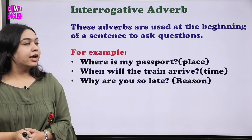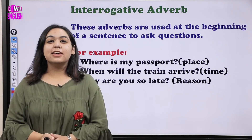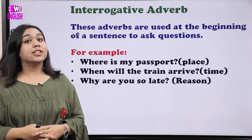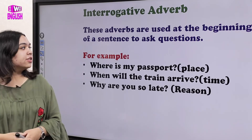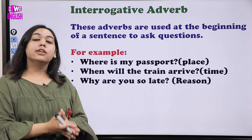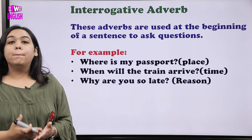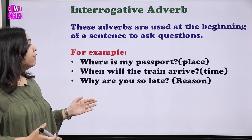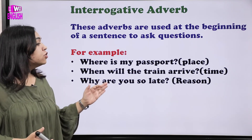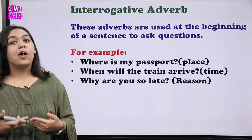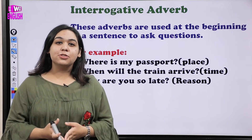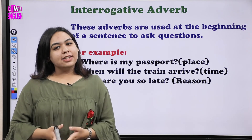The last kind is interrogative adverbs. These are adverbs used at the beginning of a sentence to ask questions. For example: 'Where is my passport?' — referring to a place. 'When will the train arrive?' — referring to time. 'Why are you so late?' — asking for a reason. So where, when, and why are interrogative adverbs. I hope adverbs and their kinds are clear. We'll meet in our next video — take care, bye-bye.